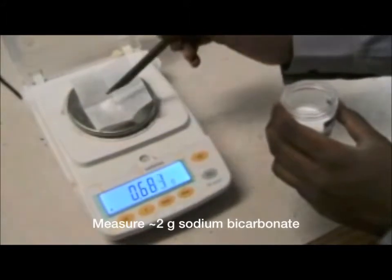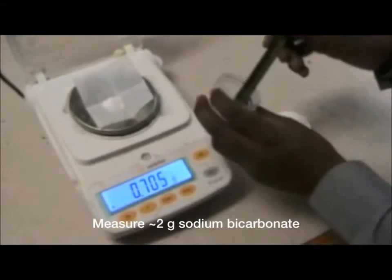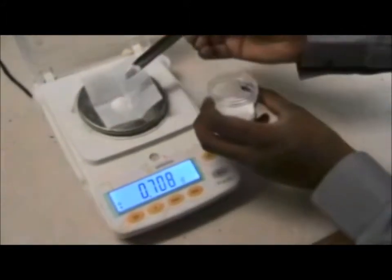After obtaining all the materials, the first step is to measure out about 2 grams of sodium hydrogen carbonate and record the mass.